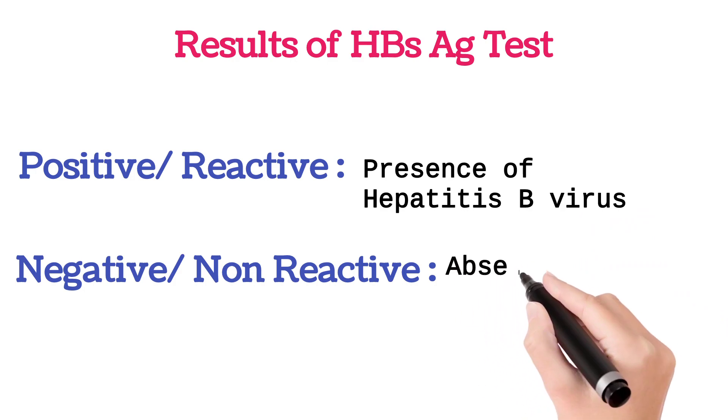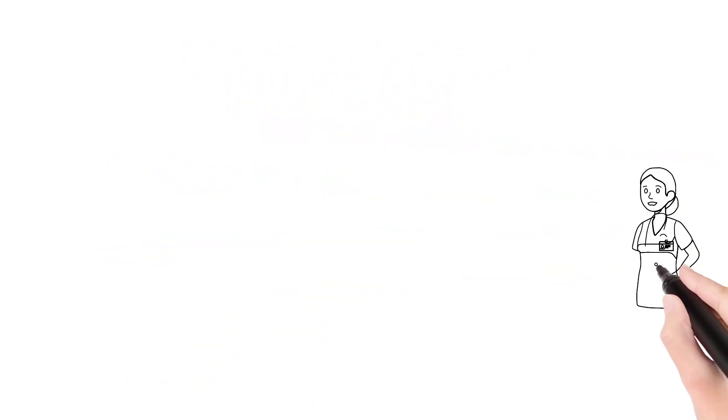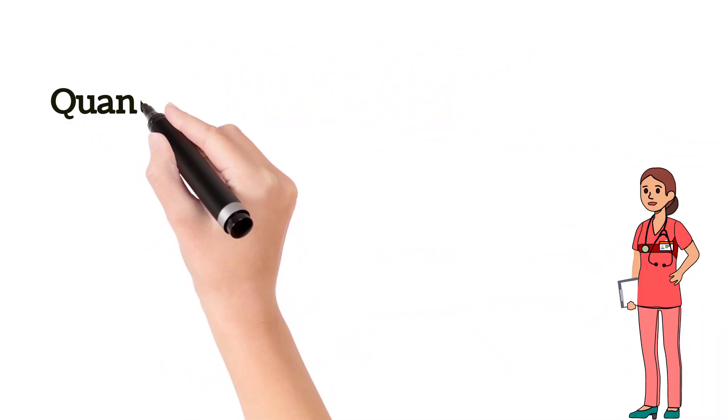Non-reactive means there is no Hepatitis B virus in the blood. Coming to the cost, it may take 500 to 800 rupees for the Hepatitis B Surface Antigen test. If the HBsAg test is positive, the doctor may advise quantitative DNA analysis or ELISA test for further confirmatory diagnosis.